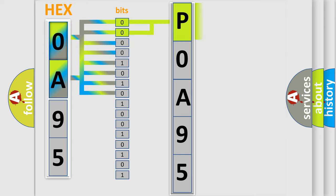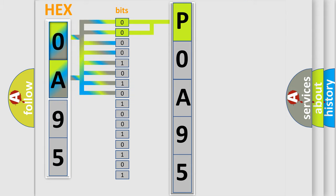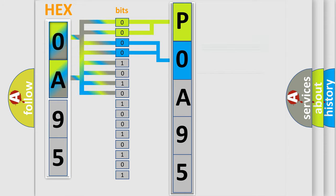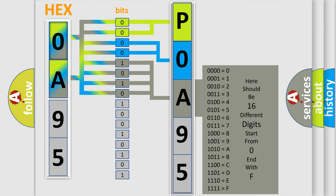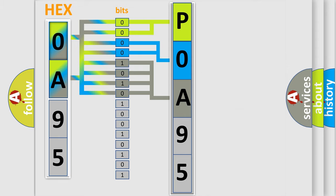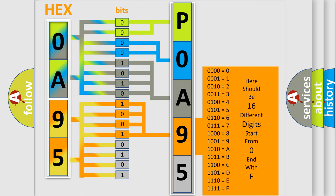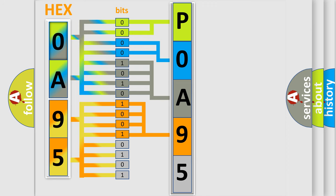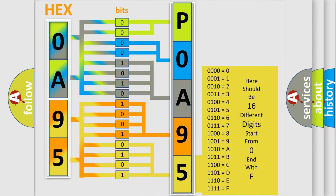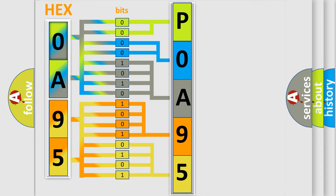By combining the first two bits, the basic character of the error code is expressed. The next two bits determine the second character. The last four bits of the first byte define the third character of the code. The second byte is composed of a combination of eight bits — the first four bits determine the fourth character, and the last four bits define the fifth character. A single byte conceals 256 possible combinations.